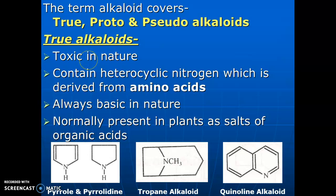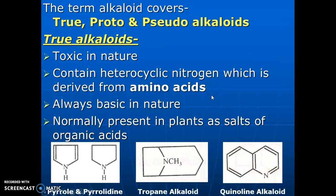True alkaloids are toxic in nature and contain heterocyclic nitrogen which is derived from amino acids. They are always basic in nature and normally present in plants as salts of organic compounds. Generally, the nitrogen is present in the heterocyclic ring. They give positive tests for alkaloids and are basic nitrogenous in nature.